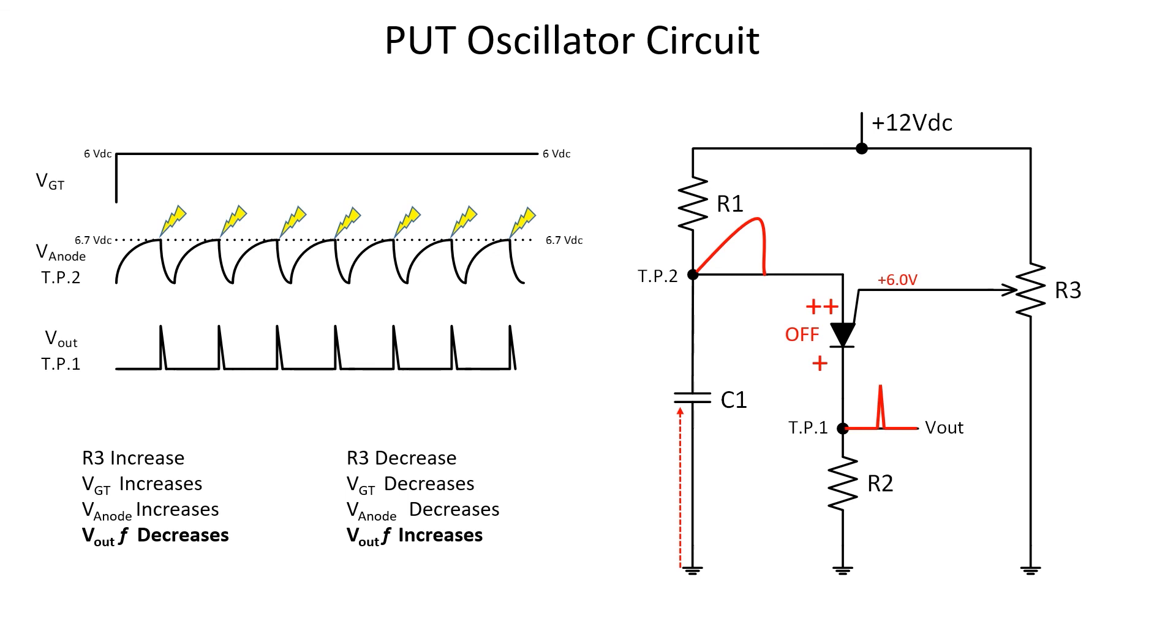And like that Journey song, the wheel in the sky keeps on turning. Lastly, the gate voltage and frequency are controlled by adjusting R3. If R3's resistance increases, the gate voltage will increase. This means C1 has to charge to a higher voltage, which takes longer before the PUT turns on. This is why frequency decreases. If R3's resistance decreases, the gate voltage decreases, meaning that requirement for the anode is less, so it turns the PUT on and off faster, so the frequency increases. Pro tip, R3 and frequency have an inverse relationship.